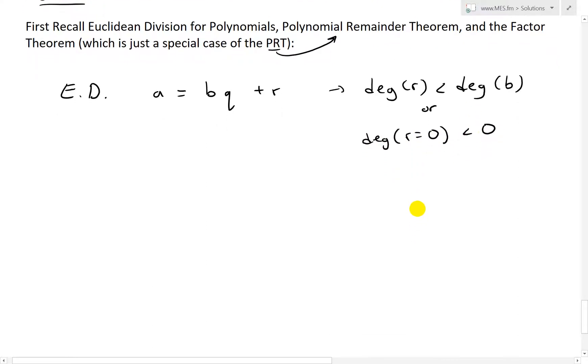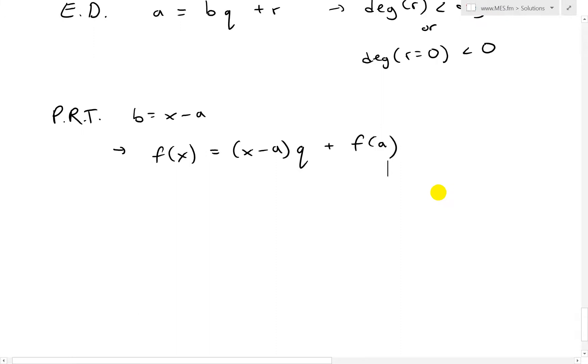And now the polynomial remainder theorem. This is for the case when we have B equals (X-A). And then from this, what we end up having is, instead of A, I'll write F(x). So F(x) equals (X-A)Q plus the remainder which is equal to F(A). Make sure to watch my earlier videos for the proof of that.